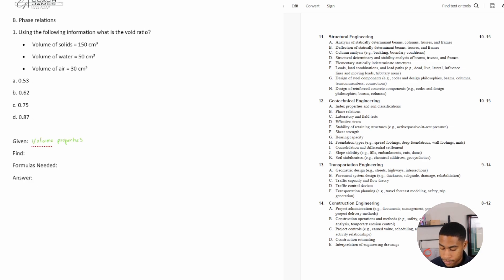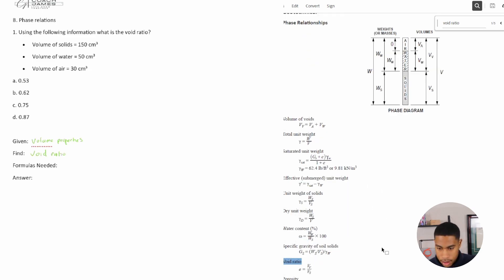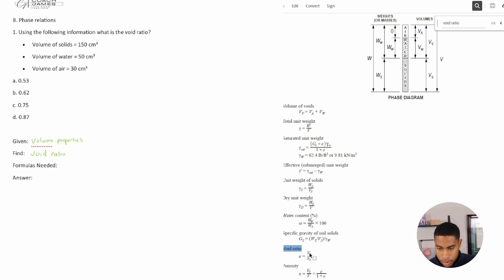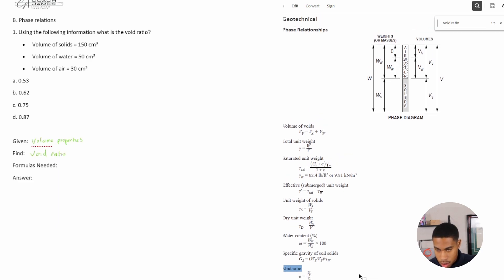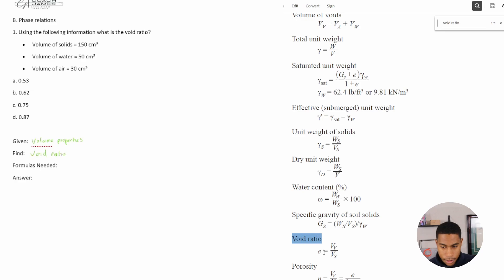Okay, so we're trying to find the void ratio. So how would I do this? Well, first thing I would do is search void ratio. And once I search that I get to the geotechnical engineering section. And they let me know that void ratio is equal to VV over VS.